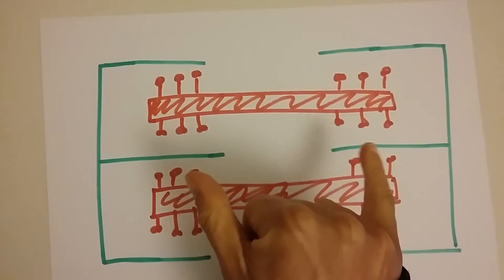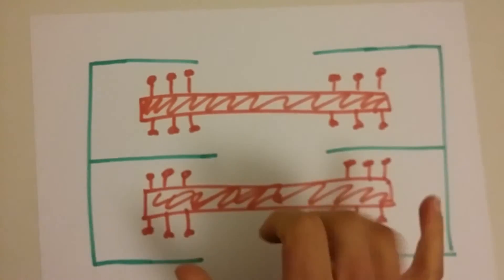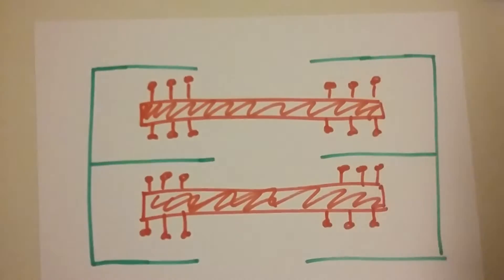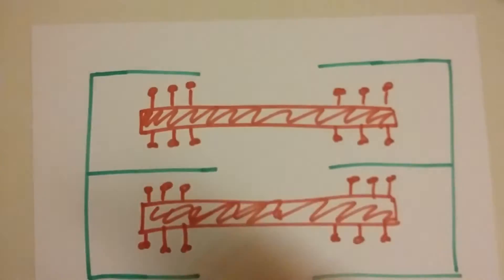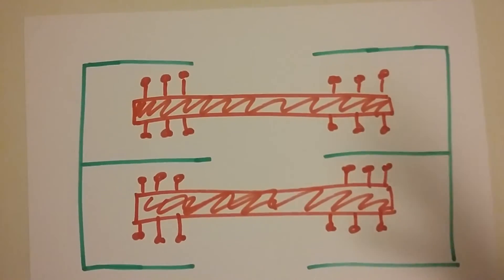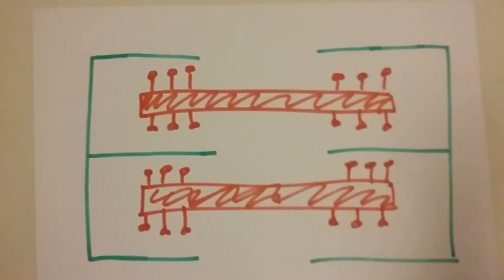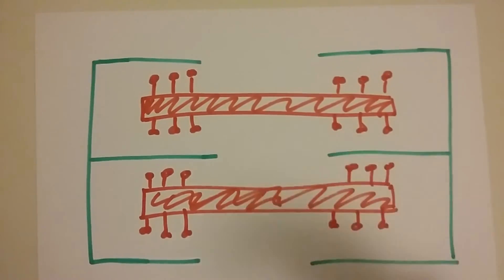And then you get a concertina effect on this sarcomere, and then that happens to the sarcomere to the right of it, to the left of it, and then you end up with a long line of sarcomeres that are all getting shorter. And that's obviously what forms a muscle fiber - that muscle fiber is getting shorter.